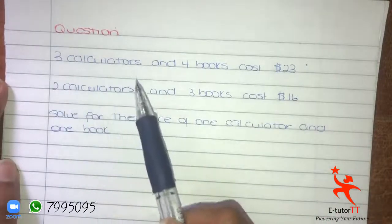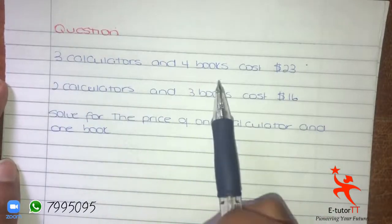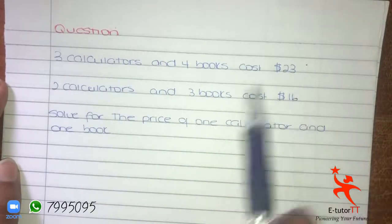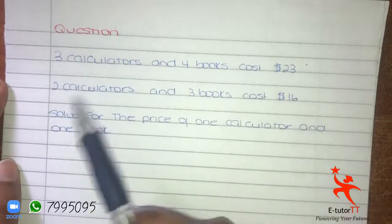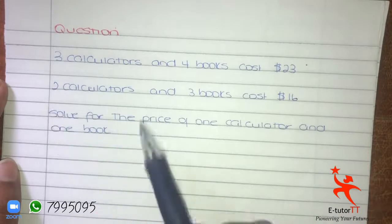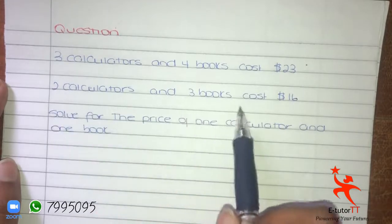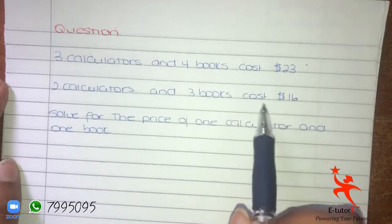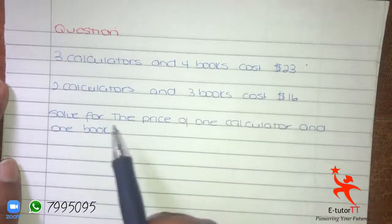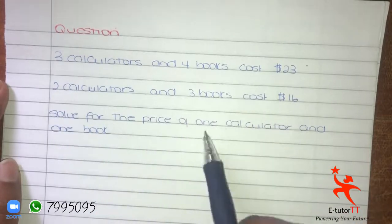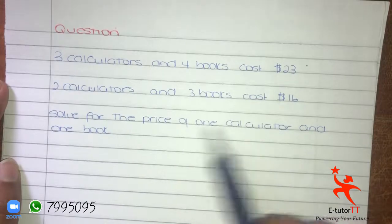This question is: 3 calculators and 4 books cost $23, and 2 calculators and 3 books cost $16. Solve for the price of 1 calculator and 1 book.